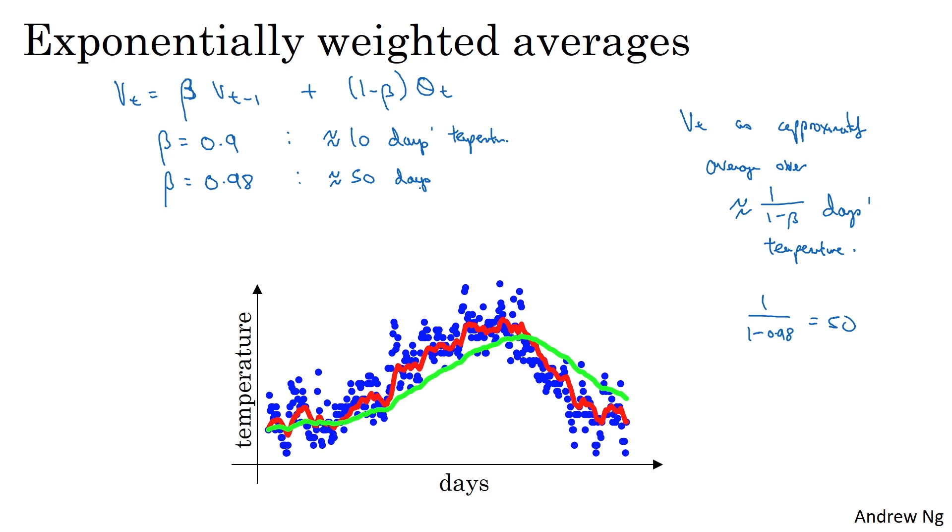So notice a couple of things. With this very high value of beta, the plot you get is much smoother because you're now averaging over more days of temperature. So the curve is less wiggly, it's now smoother. But on the flip side, the curve is now shifted further to the right because you're now averaging over a much larger window of temperatures. And by averaging over a larger window, this exponentially weighted average formula adapts more slowly when the temperature changes. So there's just a bit more latency.